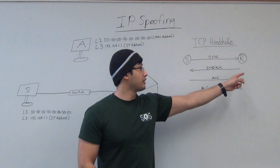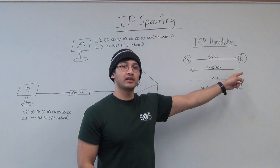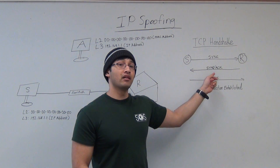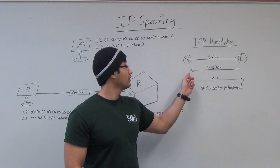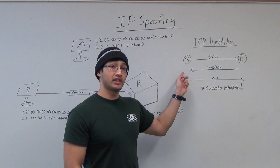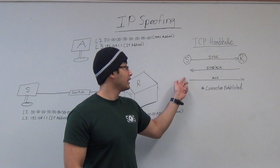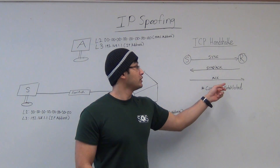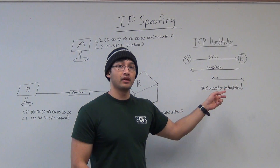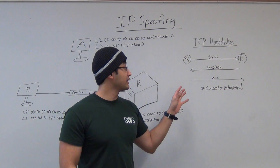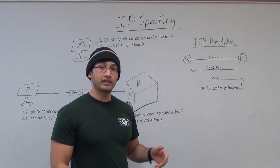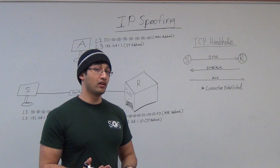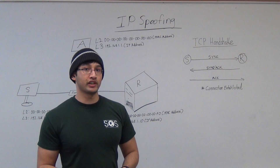First, the sender will send a packet with the SYN (synchronized) to the receiver. The receiver will respond back with a packet containing SYN and ACK. Once the sender receives that, he will send an acknowledgement to the receiver. Once that all happens, they have a connection — that's what they call a three-way handshake.